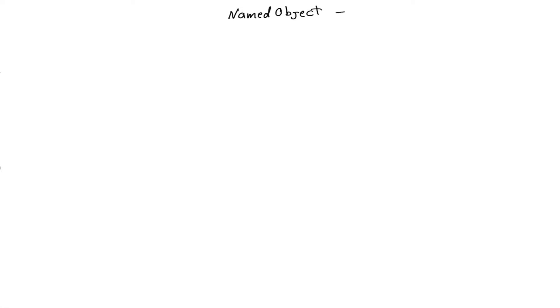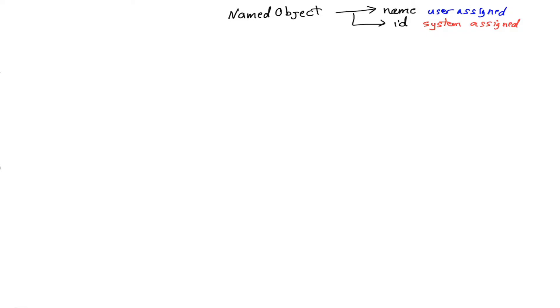So the base class of everything is what we call a named object. Named objects have names and IDs. An important thing is to notice that the ID is system assigned — you do not have control over it. But the name is user assigned. You can use the name for printing and for debugging purposes, but internally the system always uses the ID. So for example, if you want to request negotiation with another agent, this agent will have a name and an ID, but you must use the ID when you request negotiation. You cannot use the name.